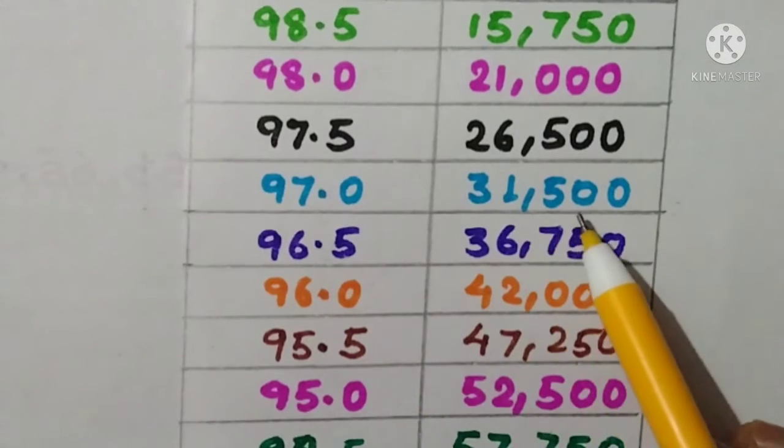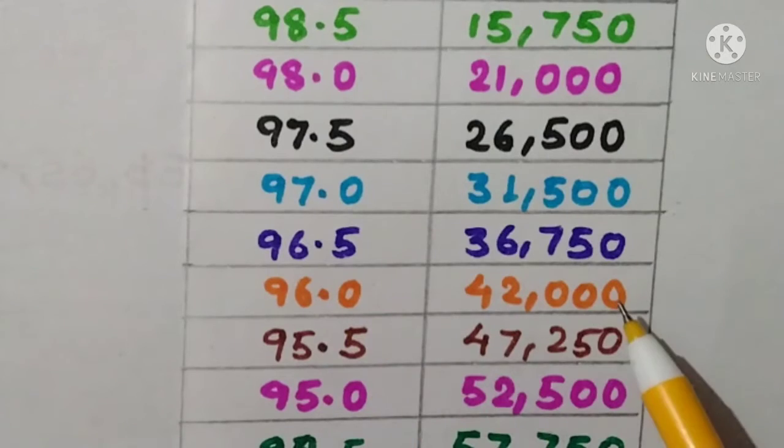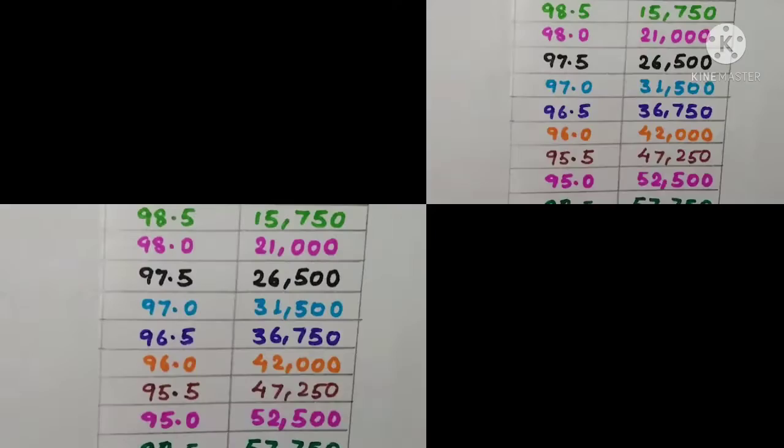If we go for 97 percentile it is 31,500. For 96 percentile it is 42,000. For 95 percentile it is 52,000.